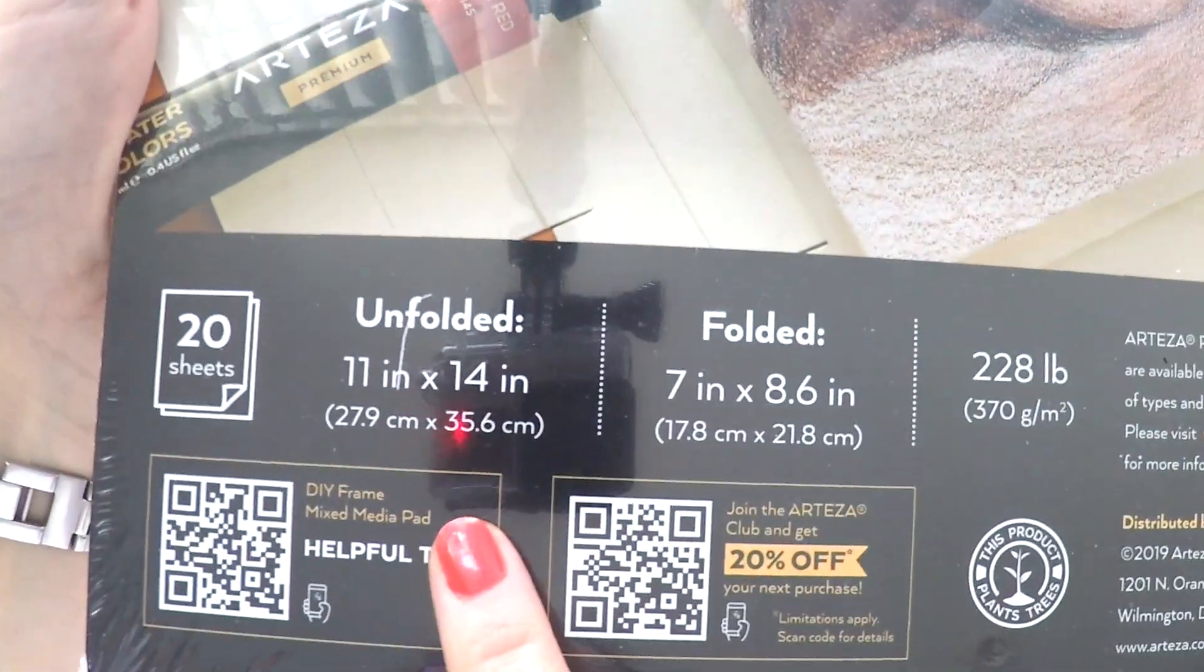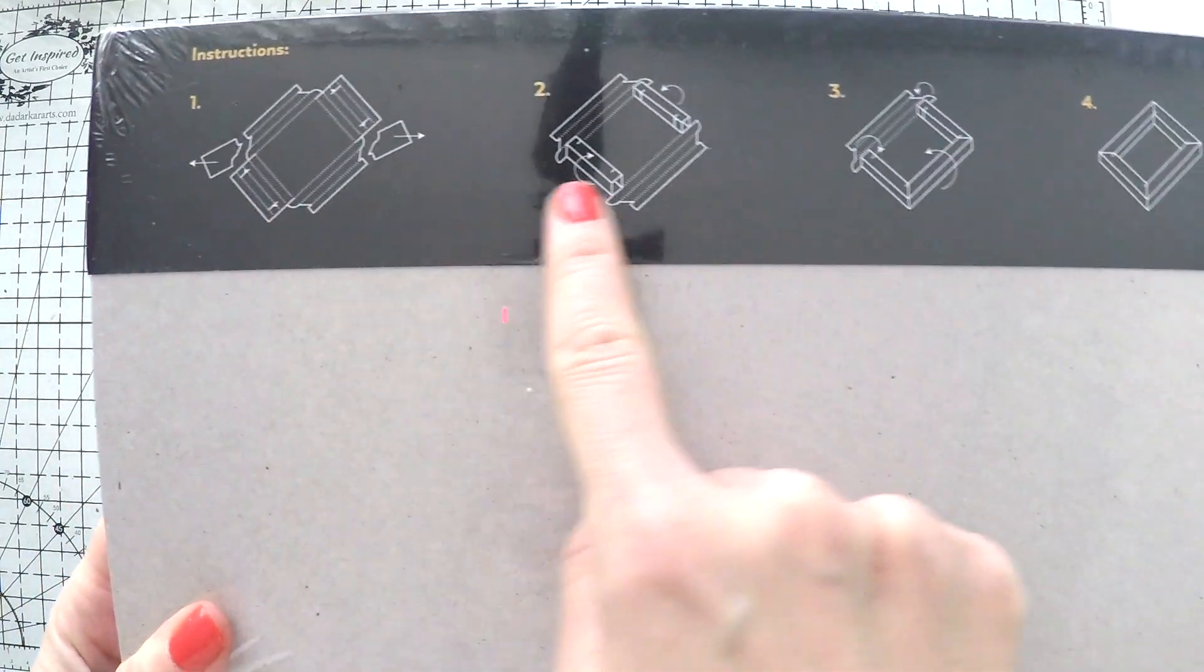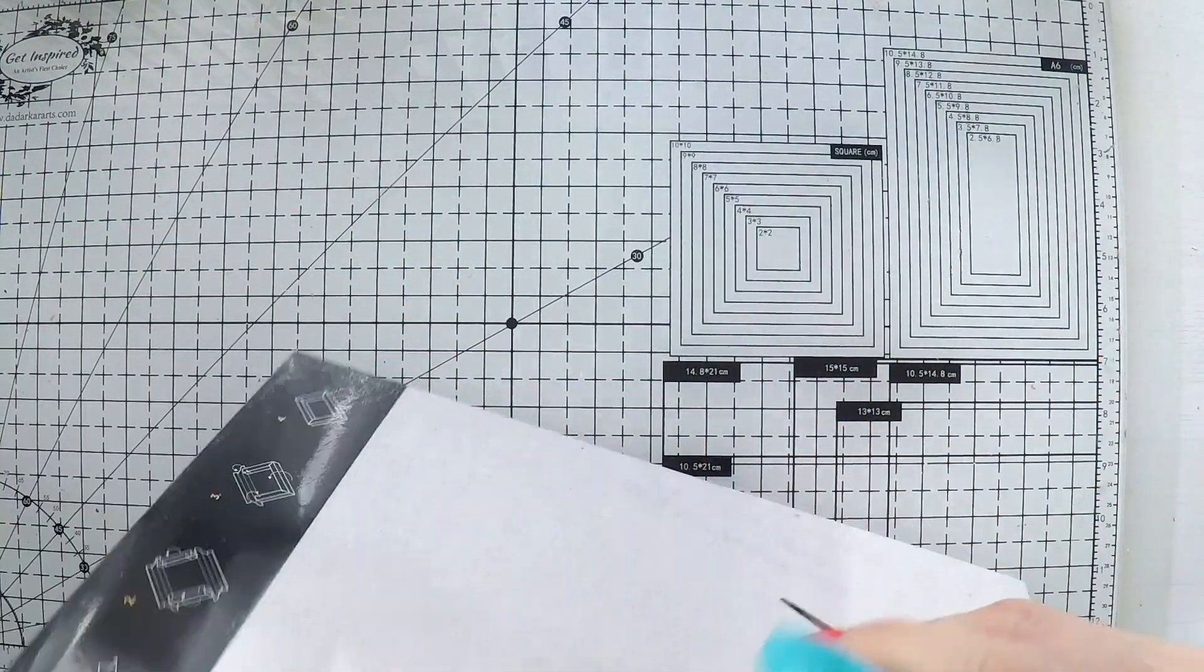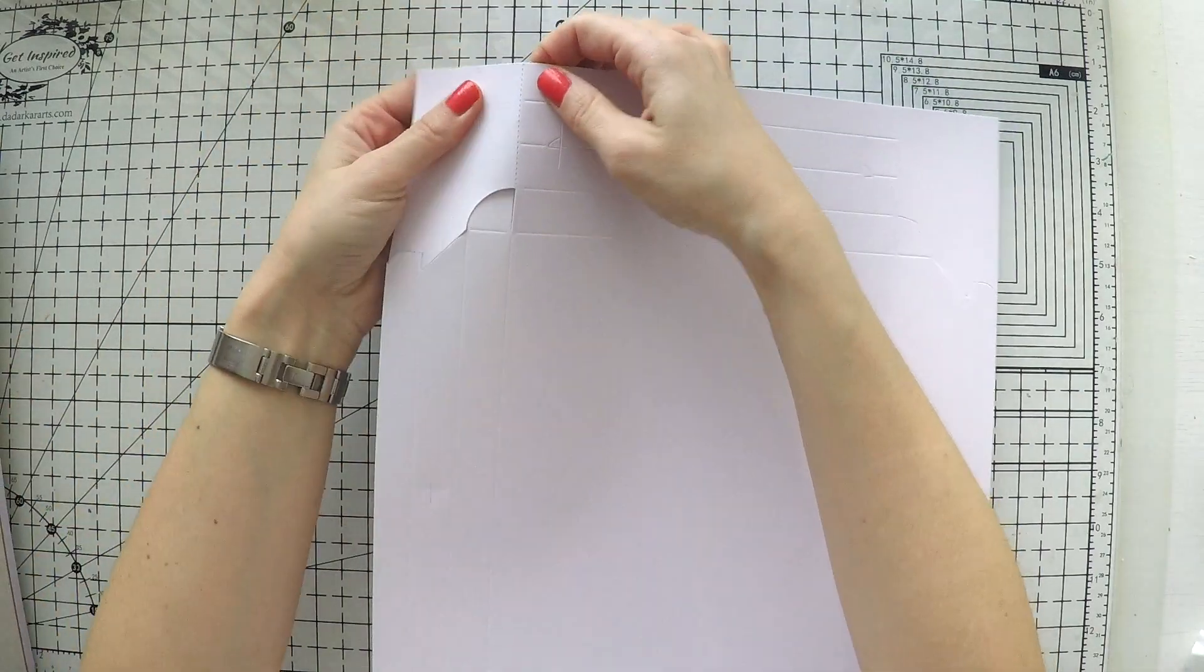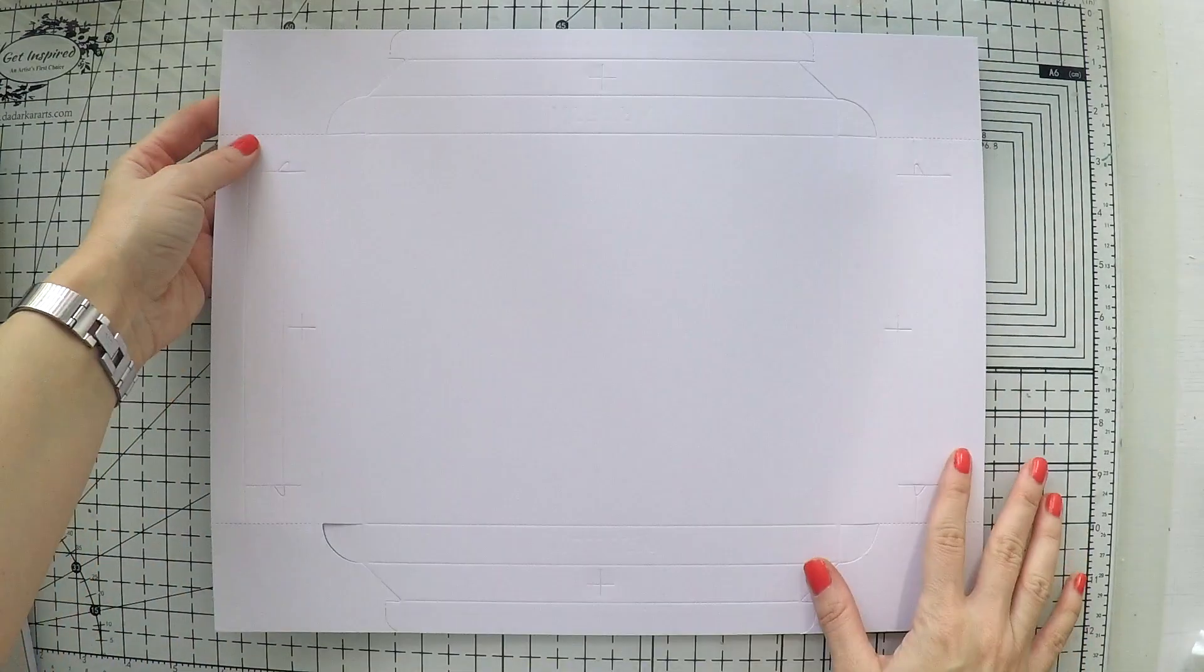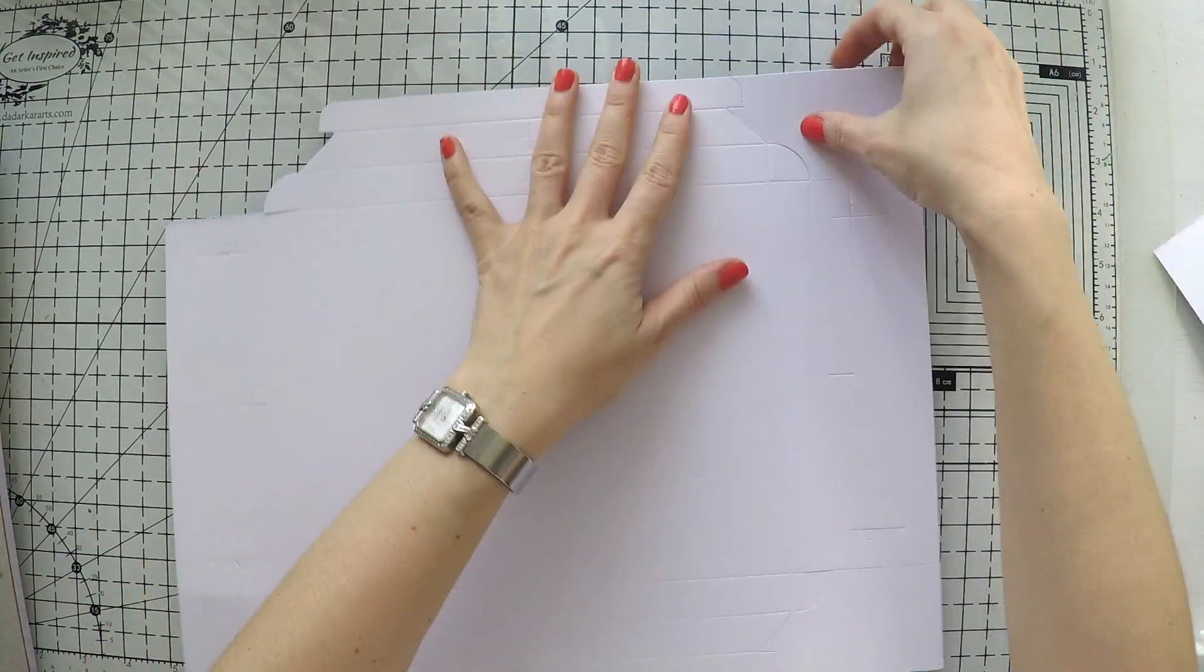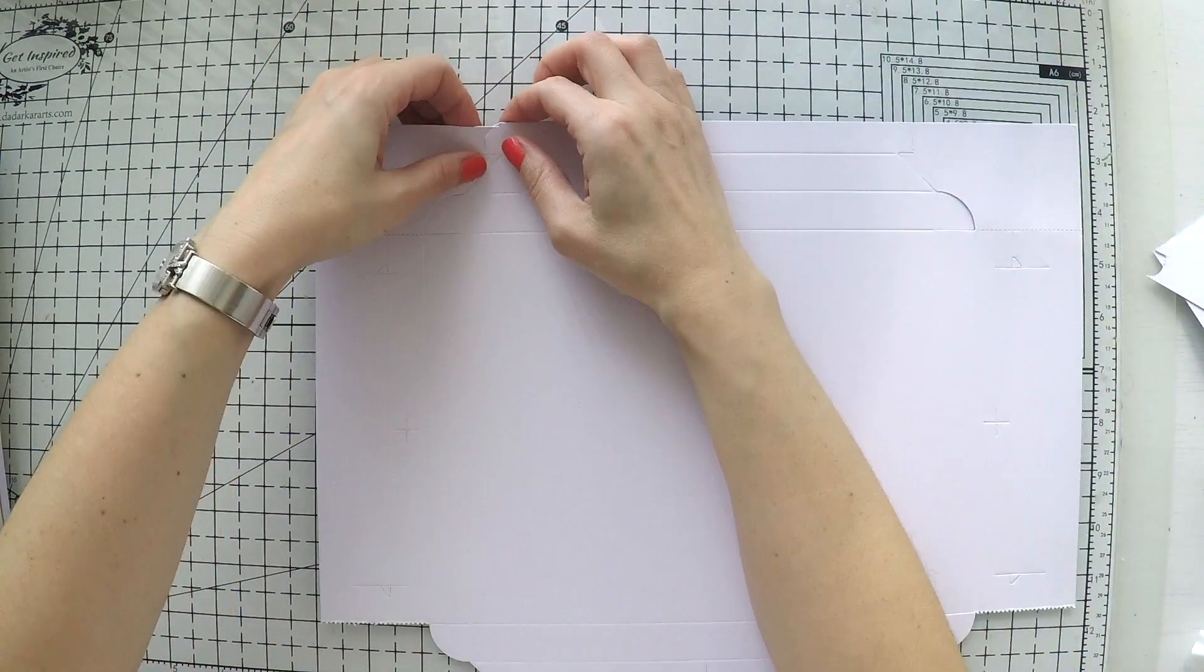This is a mixed media pad which is 11 by 14 inches, and the interesting thing about this product is you can fold it into a frame and make a nice mixed media project with it. It comes in this beautiful packaging and there are 20 of these which are easy to separate and use.